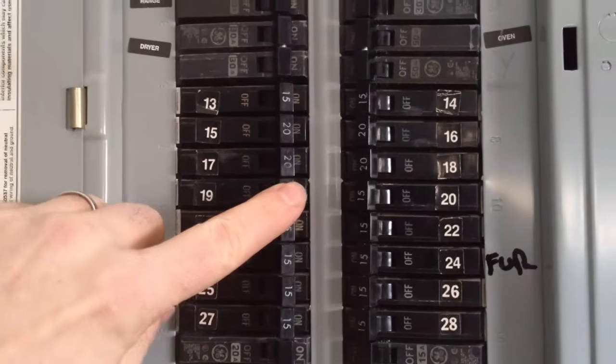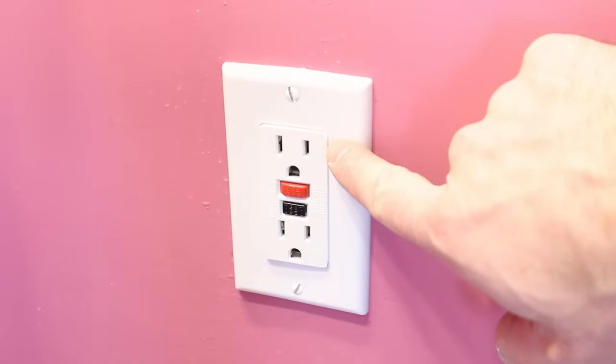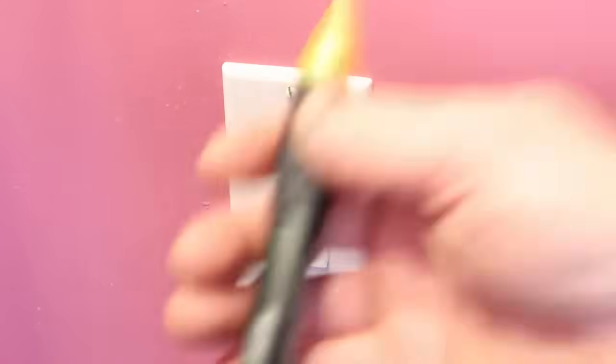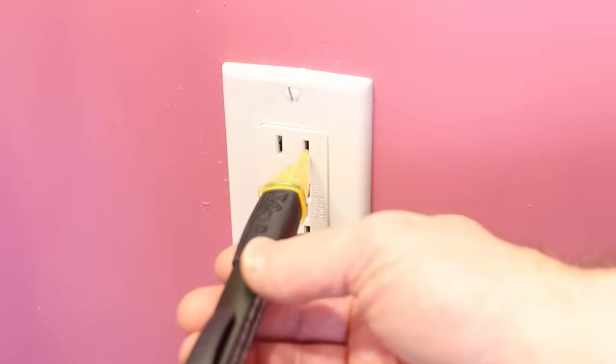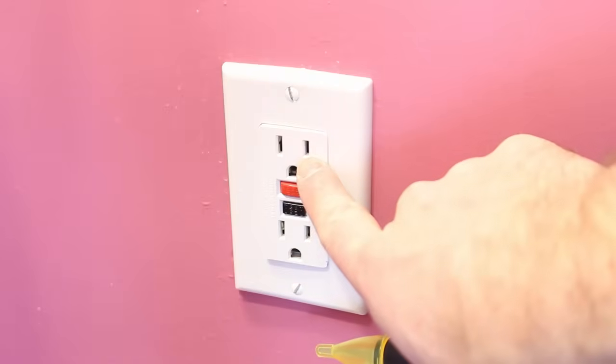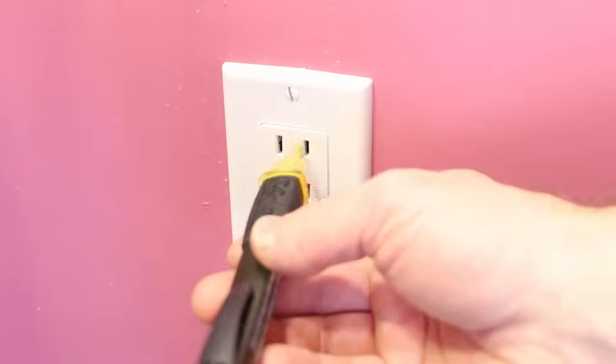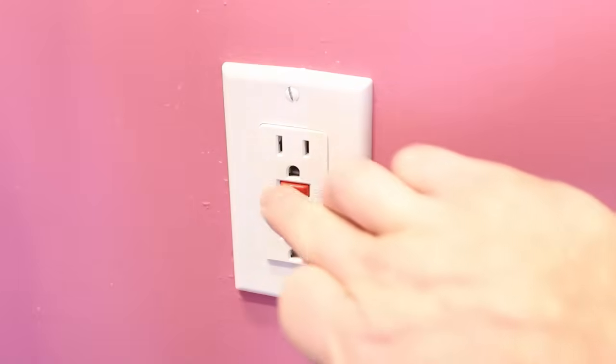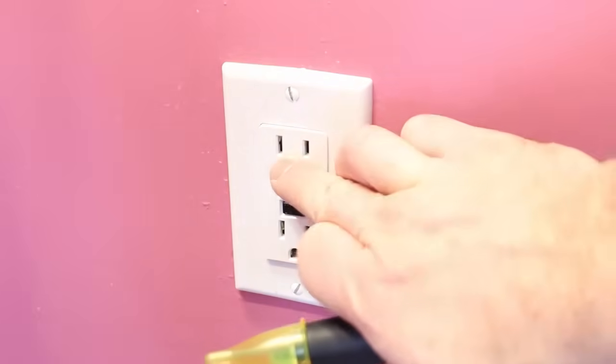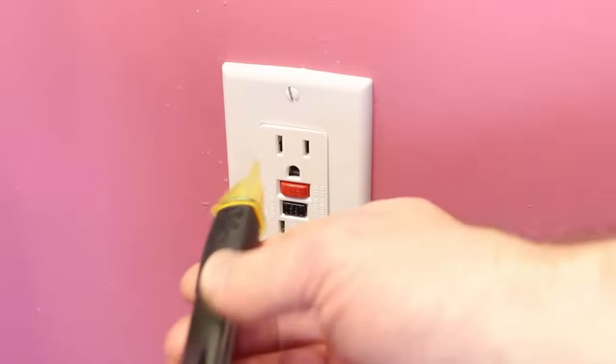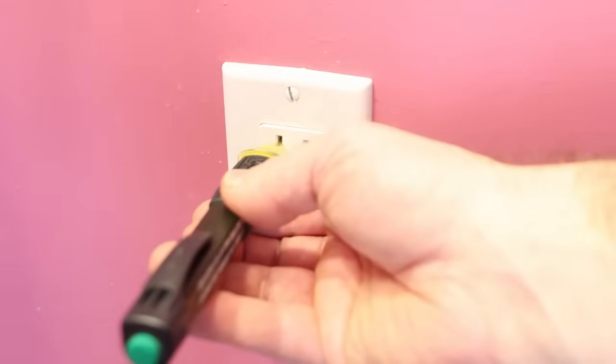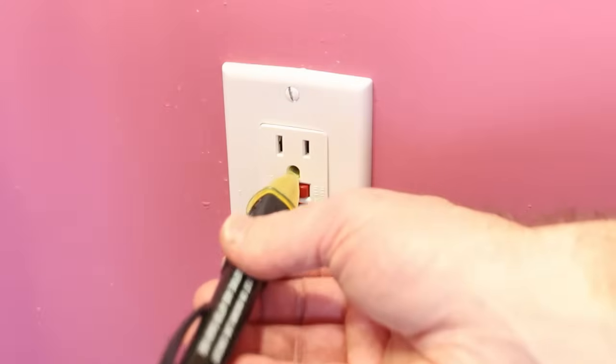Now you can go ahead and turn off the power at the circuit breaker. Once the circuit breaker is turned off, test the outlet again using your voltage detector. Stick the voltage detector into the hot slot, which is the short slot. Then just to double-check in case somebody wired this outlet incorrectly, test the neutral slot and the ground slot.